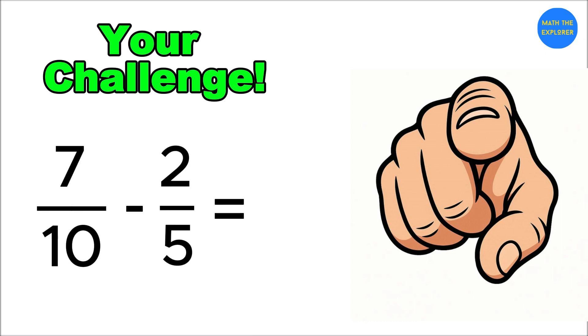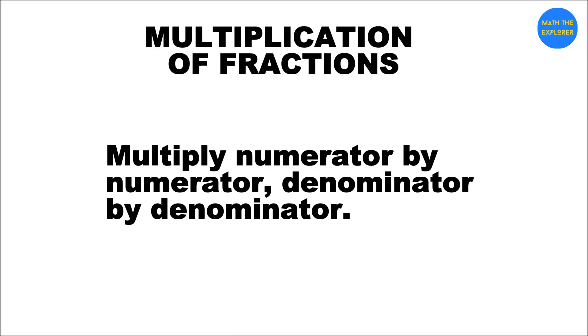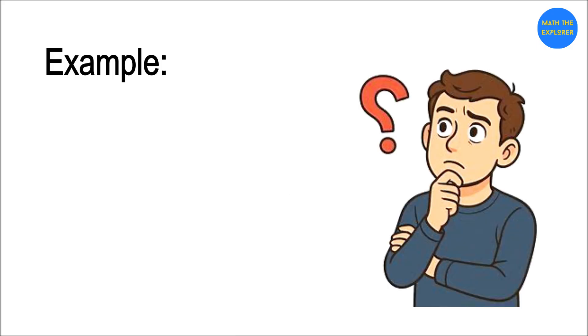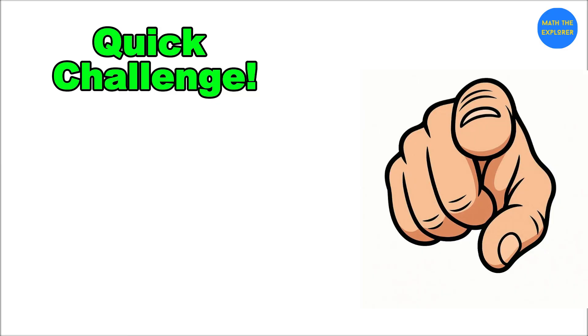Multiplication is actually the easiest. You just multiply numerator by numerator, denominator by denominator. Example: 2/3 × 4/5 = 8/15. That's it. Quick challenge: 3/7 × 2/9 equals... Answer: 6/63, which simplifies to 2/21. Did you get it?